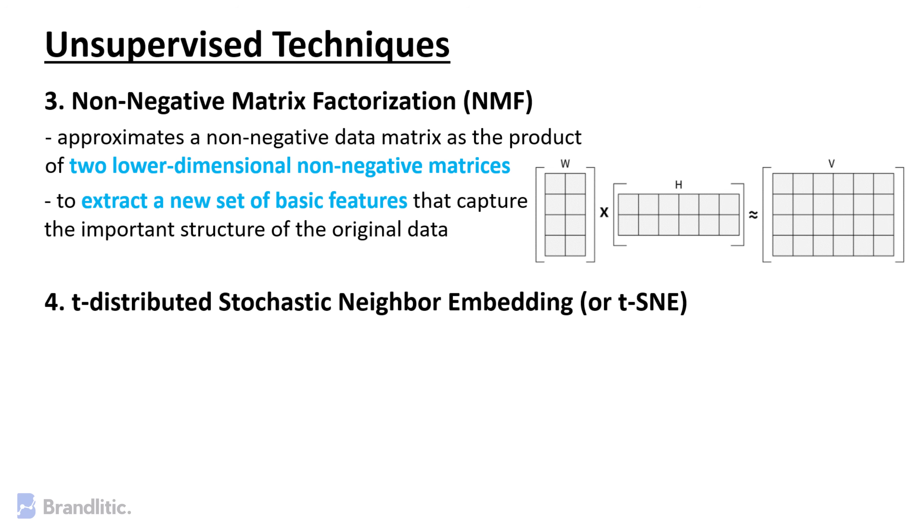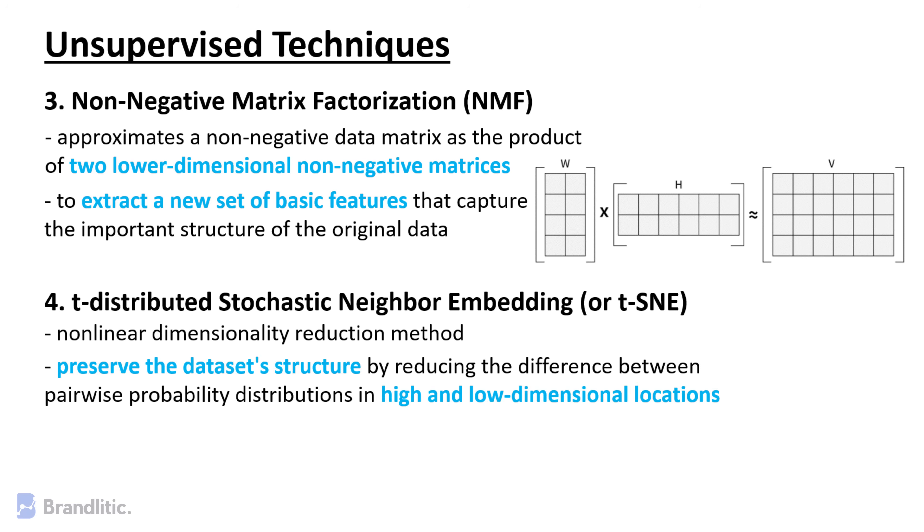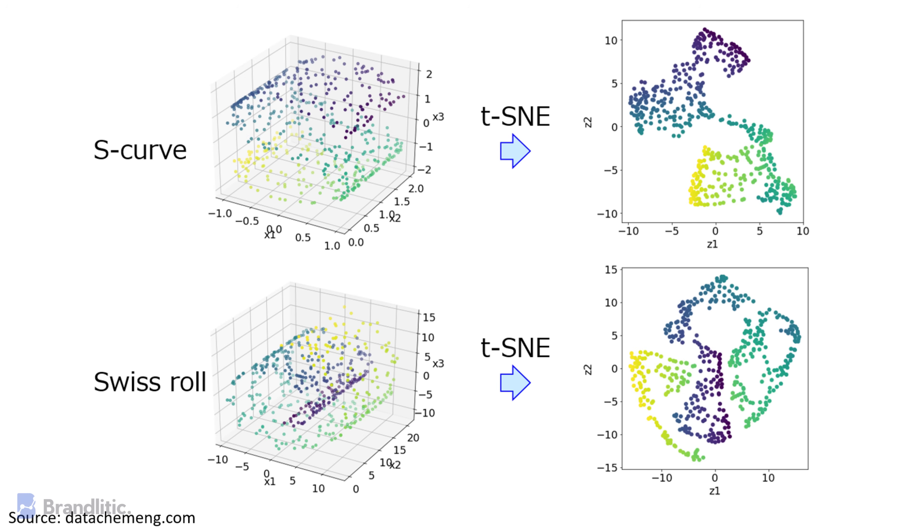T-Distributed Stochastic Neighbor Embedding or T-SNE. It is a non-linear dimensionality reduction method that tries to preserve the dataset's structure by reducing the difference between pairwise probability distributions in high- and low-dimensional locations. T-SNE may be applied in feature selection to project the original feature space into lower-dimensional space that maintains the structure of the data, allowing enhanced visualization and evaluation.